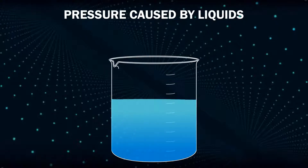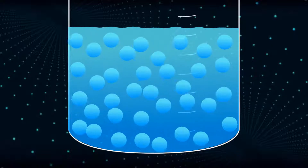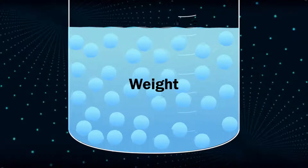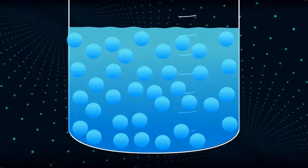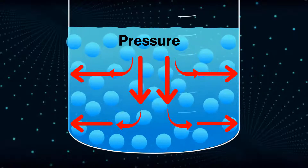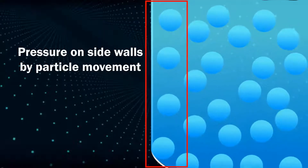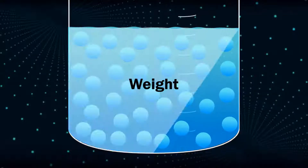Now let's learn about pressure caused by liquids. We have already studied that in liquids too, there is movement of particles. Most of the pressure that a liquid exerts is because of its weight. When water is stored in a container, pressure is not only applied in the downward direction but also sideways. Pressure on side walls is mostly applied by particle movement, and downward pressure is mostly caused by the weight of water.